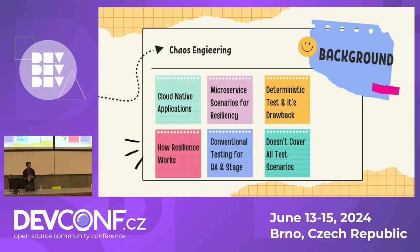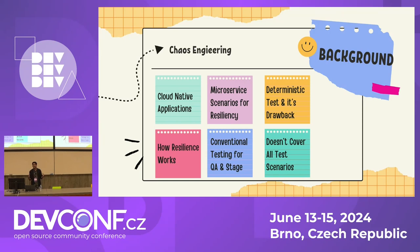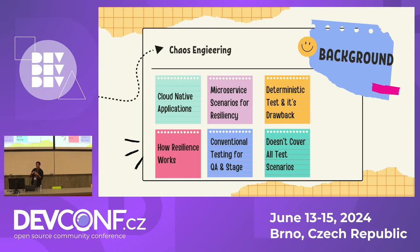I'll give a little background about chaos engineering. It's for cloud native applications — if you have any cloud native application, it will be better. We can implement chaos engineering for microservices scenarios for resilience. When we work in environments like dev, QA, stage, and prod, before going to production we do testing. But that's deterministic testing — in that case we miss a few scenarios. Whatever test cases we write, we may miss a few issues. So in deterministic testing, we have a few drawbacks.